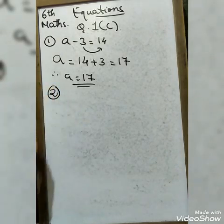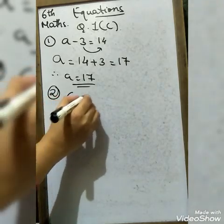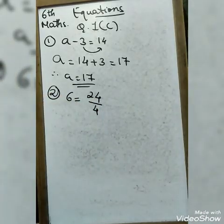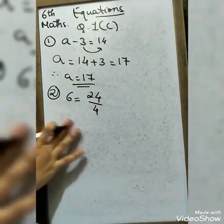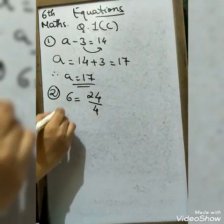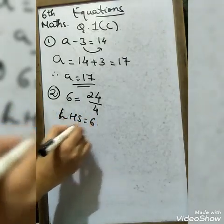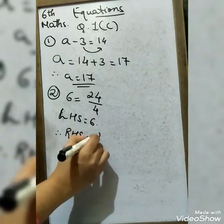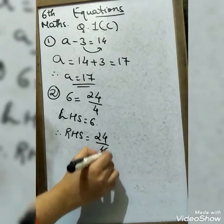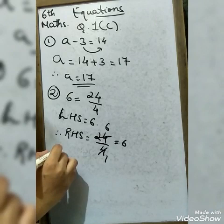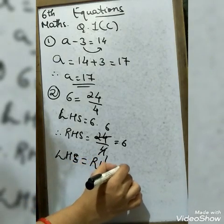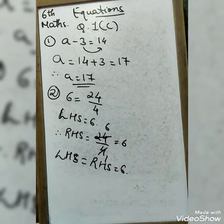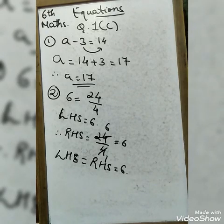The second entry is: 6 = 24 divided by 4. Solving the RHS: 24 ÷ 4 = 6. So LHS = 6 and RHS = 6 — both are equal. Therefore this is an equality. We tick mark in the equality column and put a cross mark for the equation column.